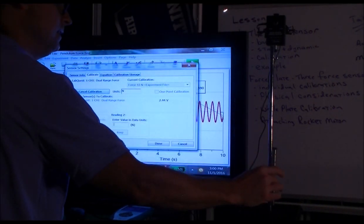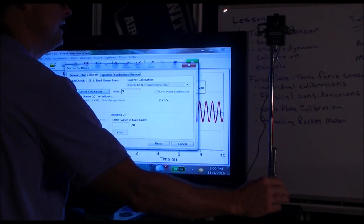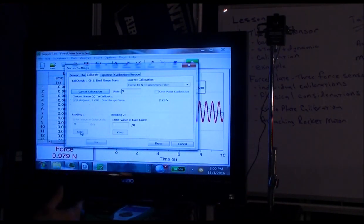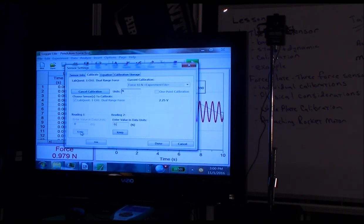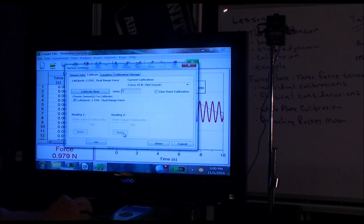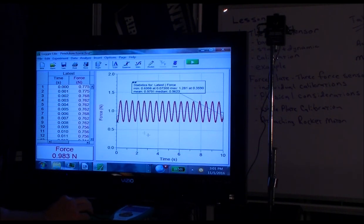Then we hang the mass once again. So now we're applying a downward force of very nearly 0.98 newtons. And then enter that as the known good force. Press keep. Press done. And now we're recalibrated.